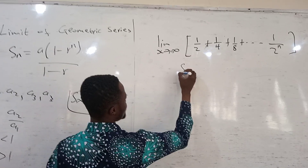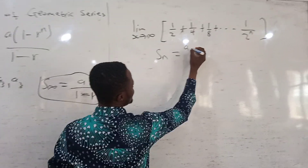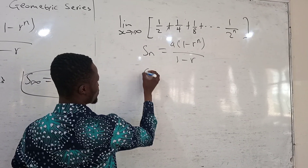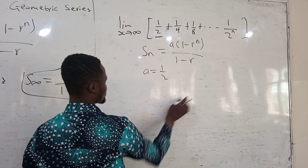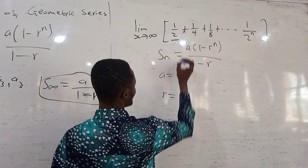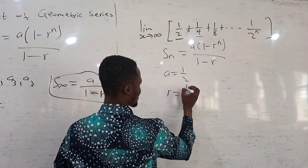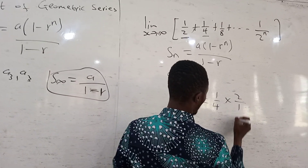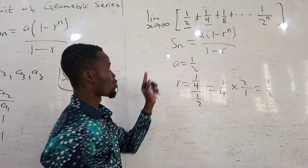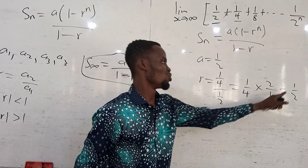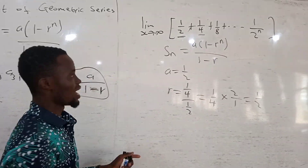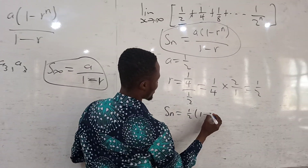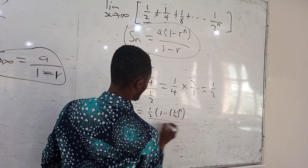For this one, we are going to use the first formula. The formula is: a times (1 minus r to the power n) divided by (1 minus r). My first term a is 1/2. My common ratio r equals the second term divided by the first term, which is 1/4 times 2/1, equal to 1/2.